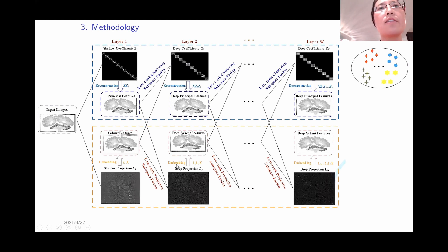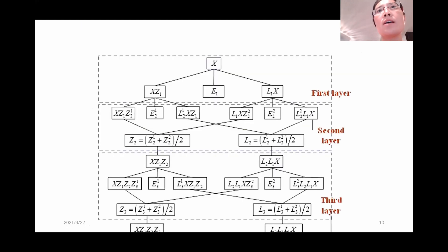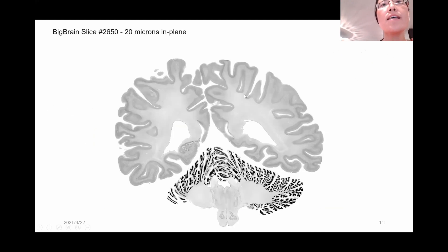We get the current layers' principal features and the current layer's projection matrix L. Each layer will do this kind of work. Here in this work, I use three layers, and this is the flowchart of it.